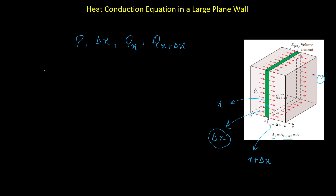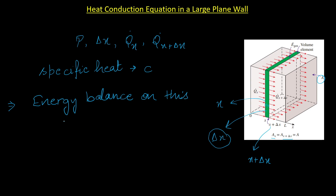The specific heat of that material is denoted as small c. These are the constants and variables we are going to use while deriving the heat conduction equation. We write the energy balance on this thin wall of thickness delta x.